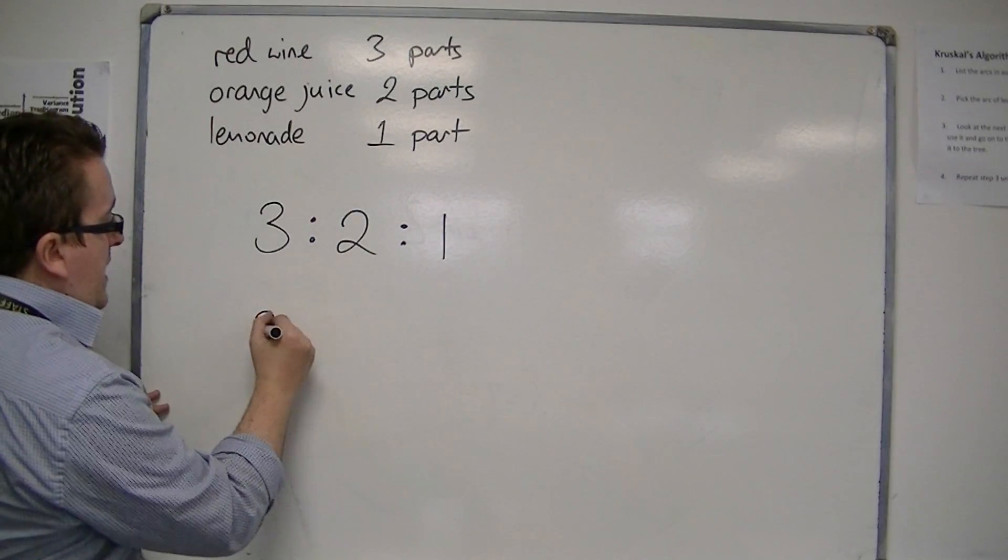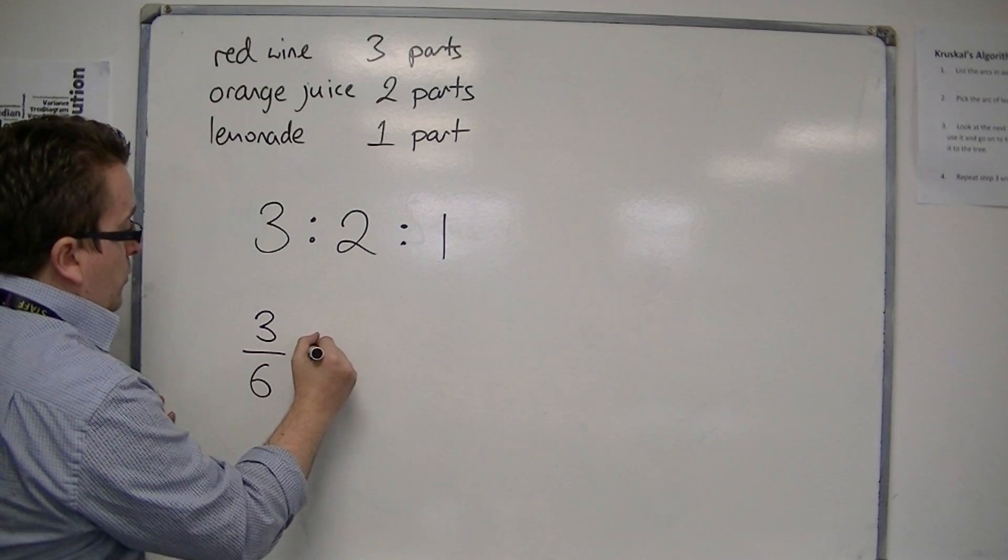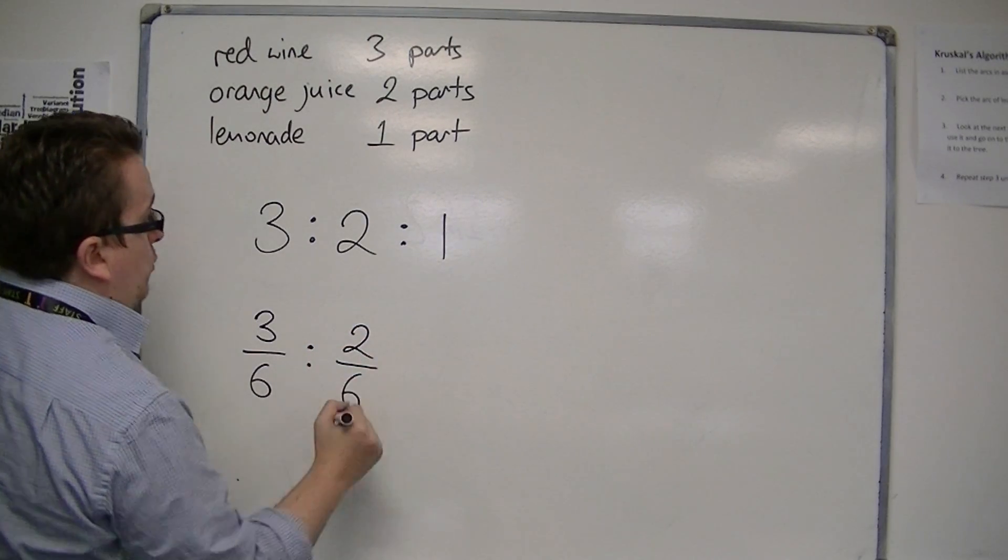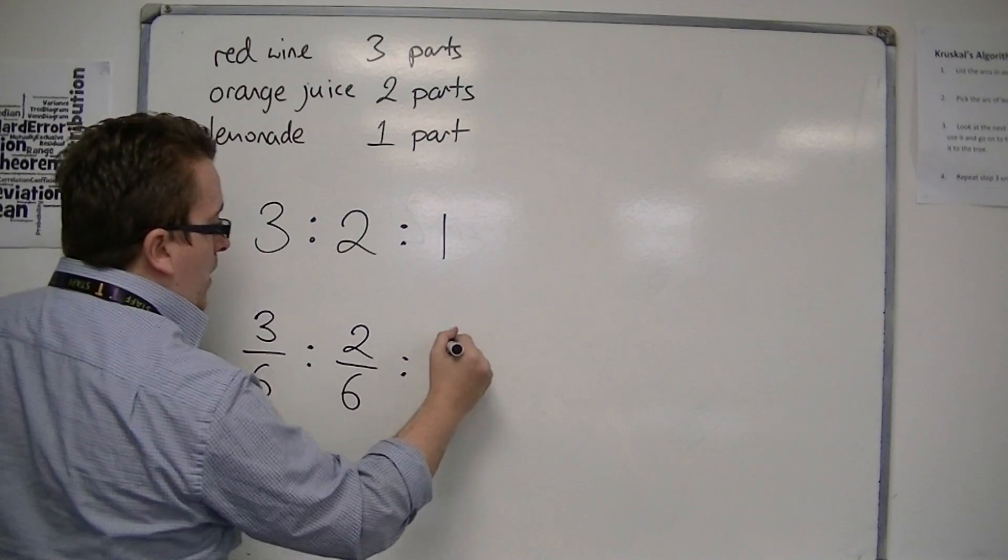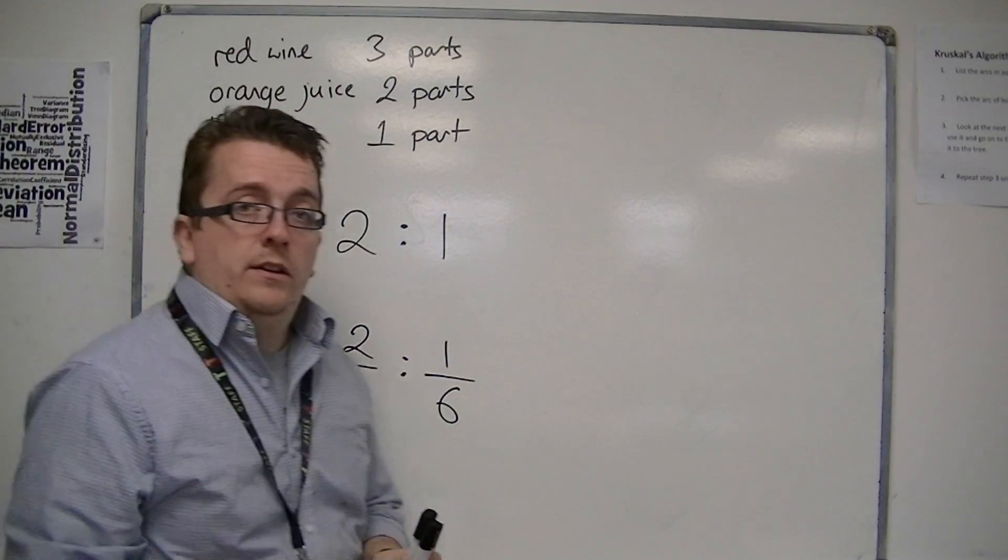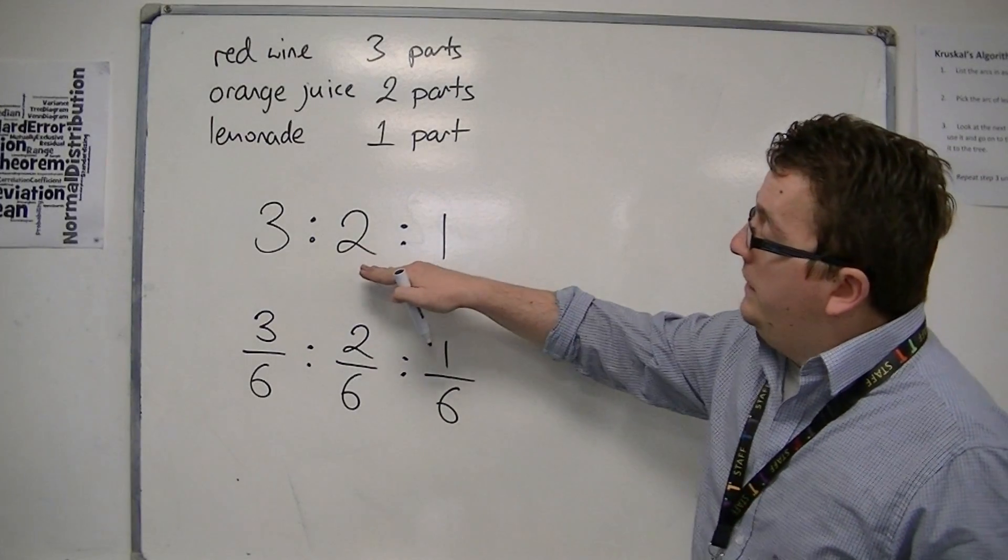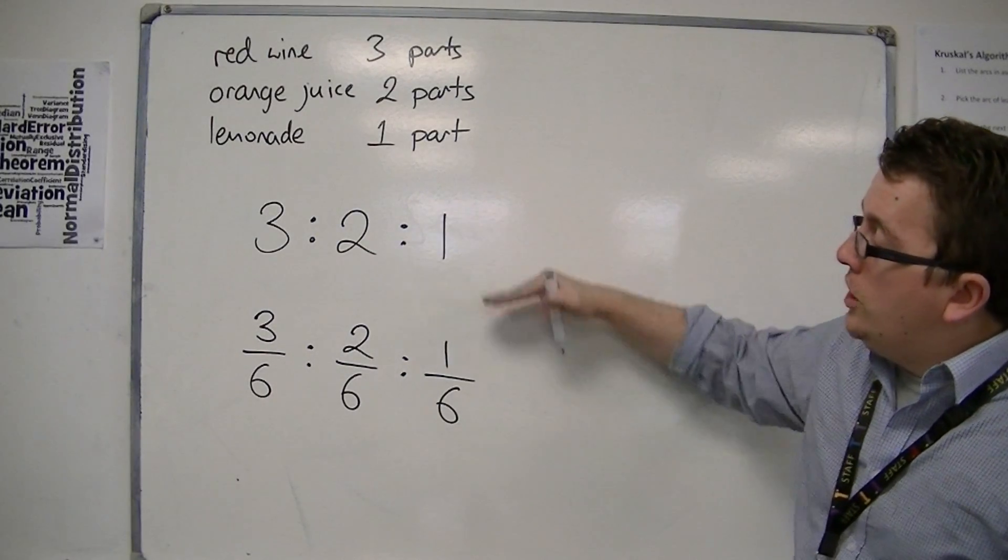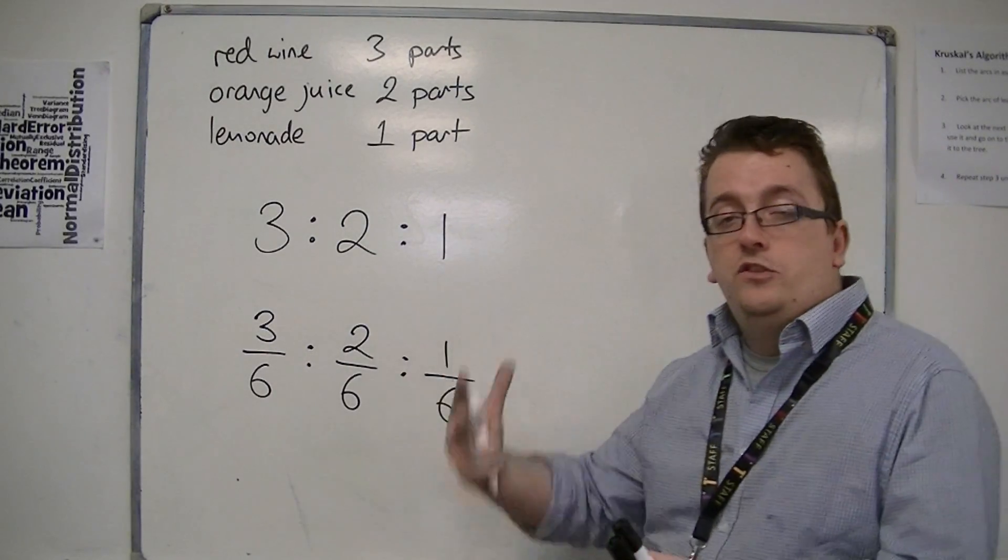So three out of the six would be red wine, two out of the six would be orange juice, and one out of the six would be lemonade. And so there is a distinct link between ratio and then converting it into fractions.